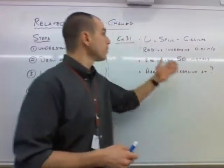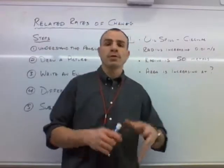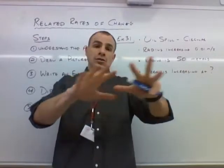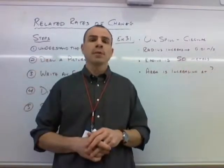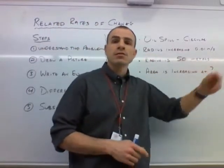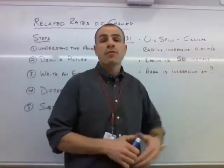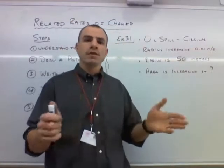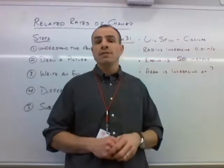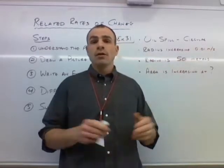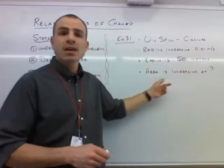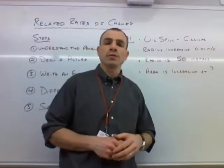In example 31 we've got a circular oil spill in the water. Oil is spreading across the water in a circular pattern. We know that the radius is increasing at 1/100th of a meter per second, and at this moment the radius is 50 meters long. The question is: how fast is the area of the oil spill increasing?